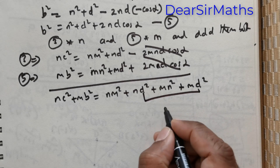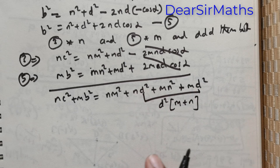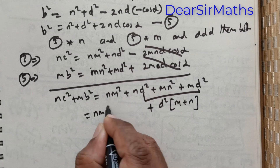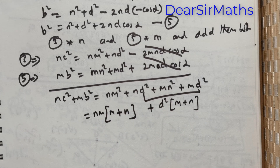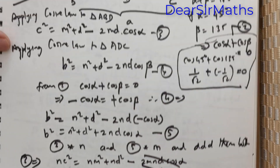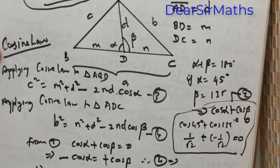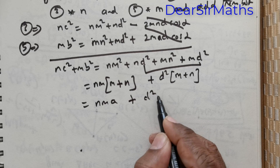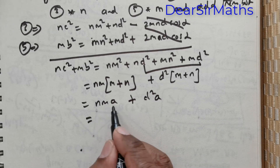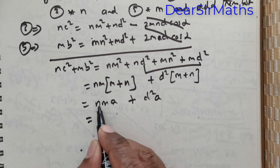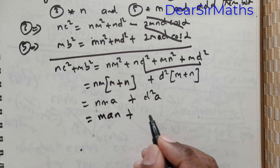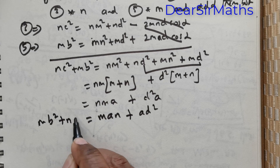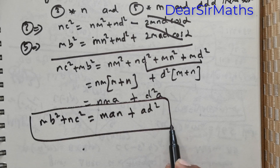So we get: NC squared plus MB squared equals NM squared plus ND squared plus MN squared plus MD squared. Taking D squared out gives D squared times (M plus N), and taking NM out from the other terms gives NM times (M plus N). Since M plus N equals A — the entire side — we get: NC squared plus MB squared equals MAN plus AD squared times A. This is Stewart's theorem.